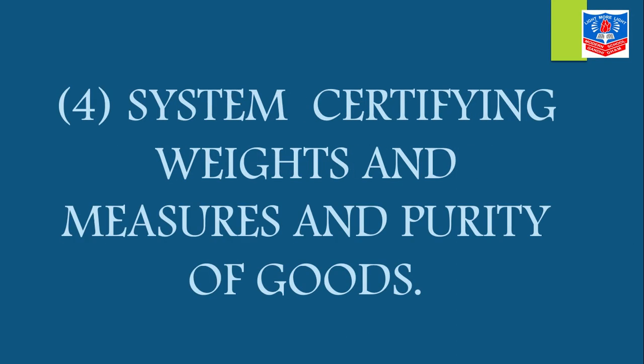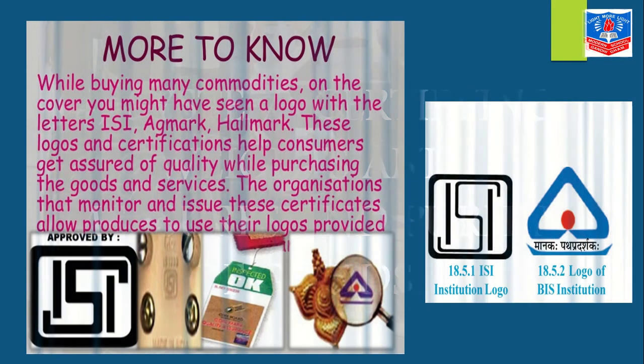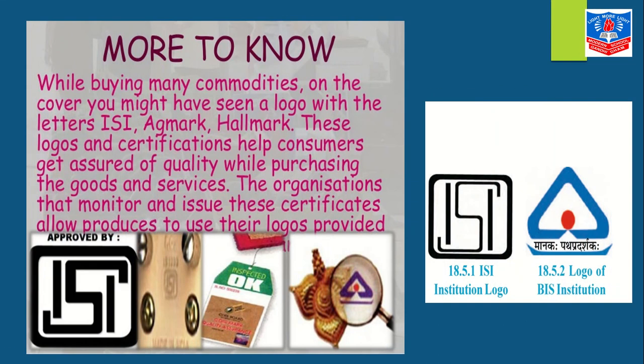The last measure is the system of certifying weights, measures, and purity of goods. The government has made a particular system — certifying goods and their purity through symbols and logos that give assurance of quality. The Government of India established the ISI mark, also known as the ISI institute. You can see the logo — the ISI mark, the Agmark, or the BIS mark.